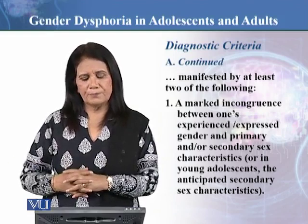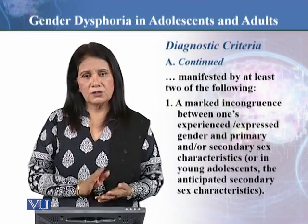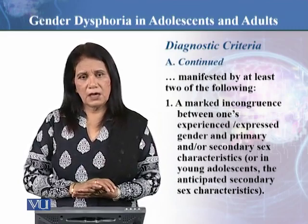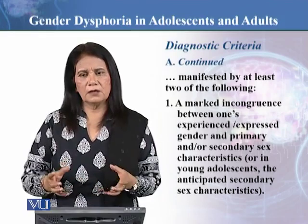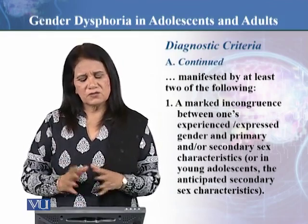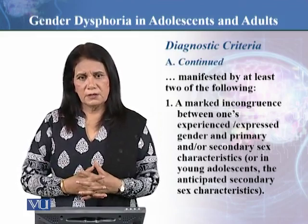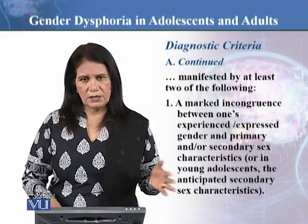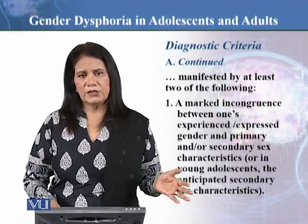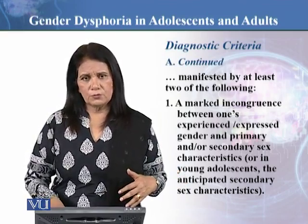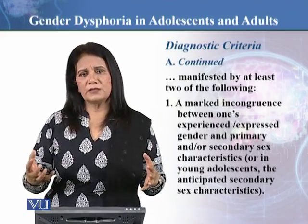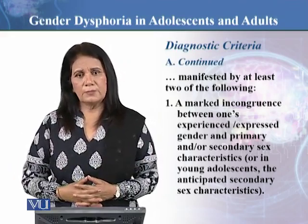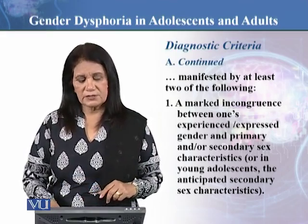Children don't have secondary sex characteristics yet, which is why this criterion doesn't apply there. But in adolescents and adults, secondary sex characteristics are either anticipated or have already developed. In both cases, there is incongruence — whether a girl is becoming a woman or a boy is becoming a man, those secondary sex characteristics are incongruent with their experienced gender, causing dysphoria.